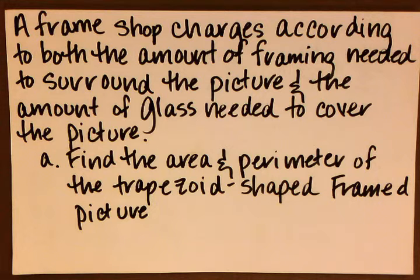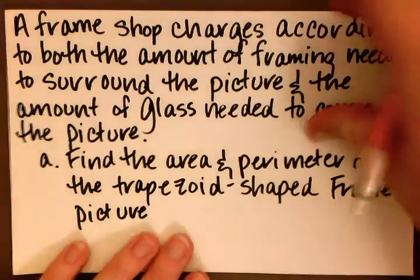A frame shop charges according to both the amount of framing needed to surround the picture and the amount of glass needed to cover the picture. This is a two-part question. We'll start with part A. Find the area and perimeter of the trapezoid-shaped framed picture.